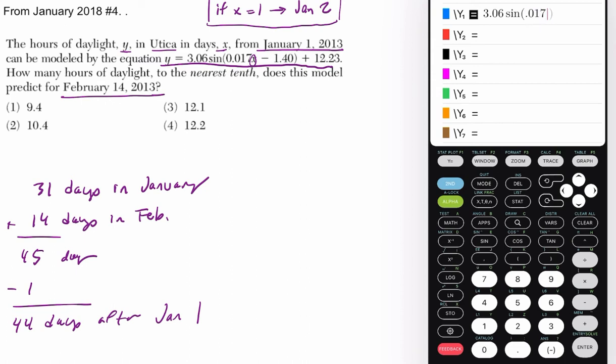But anyway, 0.017X minus 1.4, close parentheses, and then plus. Now, this calculator freaks me out. It doesn't show when I'm entering here, but there we go. Press graph.